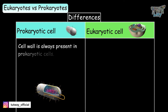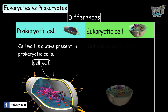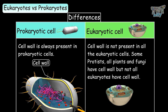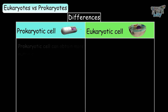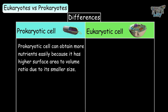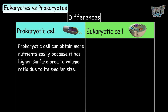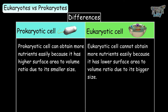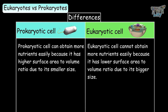The cell wall is always present in prokaryotic cells, but is not universally present in eukaryotic cells — some protists and all plants and fungi have a cell wall, but not all eukaryotes do. Prokaryotic cells can obtain more nutrients easily because they have a higher surface area to volume ratio due to their smaller size, whereas eukaryotic cells have a lower surface area to volume ratio due to their bigger size.